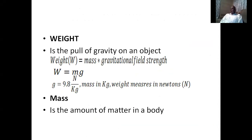First of all, we need to define what weight is. We are aware that weight is the pull of gravity on an object. That is why different objects can have different weights at different points on Earth and on other planets, because weight depends on the pull of gravity on the object. Weight is equal to mass multiplied by gravitational field strength.